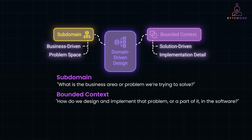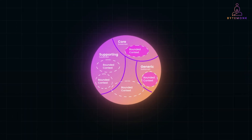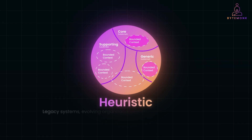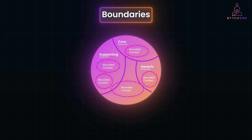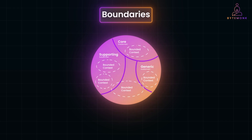Often you will see a one-to-one correlation where each important subdomain is realized by a single bounded context. But that's not a rule — it's a heuristic. For various reasons, such as legacy systems, evolving organizational structures, or simply complexity, you might need multiple bounded contexts to handle one subdomain effectively. Boundaries are at the heart of architectural design. They define what's in, what's out, and how different parts of a system interact. In domain-driven design, bounded contexts provide a framework for defining these boundaries, both in terms of the models we use and how we organize the systems that implement them.